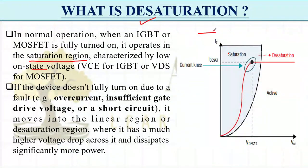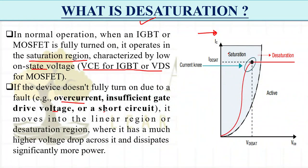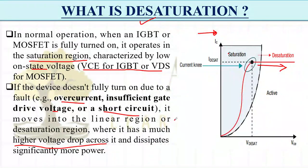Every device has a particular on-state voltage — if the voltage across the device exceeds that threshold, the device may be damaged. If the device doesn't fully turn on, or is in a fault condition due to overcurrent, insufficient gate drive voltage, or a short circuit, the device characteristics move into the active region, where a very high voltage drop occurs and the device enters a state of desaturation, causing high heat dissipation and potential damage.